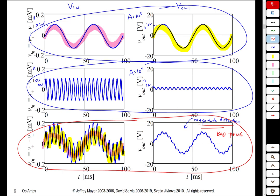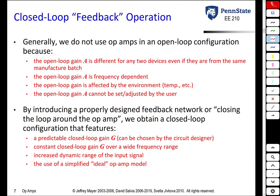In practice, we use op-amps in what we call closed-loop feedback. Some problems with open-loop configuration are that the gain A varies from device to device, is frequency dependent, and is affected by temperature and humidity. Another issue is that you have no control over the open-loop gain. By designing a feedback network — resistors, capacitors, inductors placed external to the op-amp connecting the input to the output, thereby closing the loop — we get a closed-loop configuration with several desirable results.